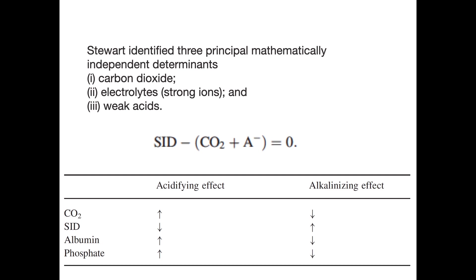Stewart identified three principal, mathematically independent determinants of acid-base status: carbon dioxide, the strong ion difference (SID), and the weak acids (ATOT). The formula is: SID minus CO2 plus weak acids equals zero. A change in this equation produces acidosis or alkalosis. An increase in CO2 causes acidosis; a decrease in SID causes acidosis; and an increase in albumin or phosphate, increasing the weak ion concentration, also causes acidosis. The opposite effects produce alkalosis.